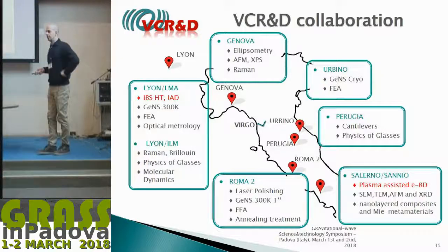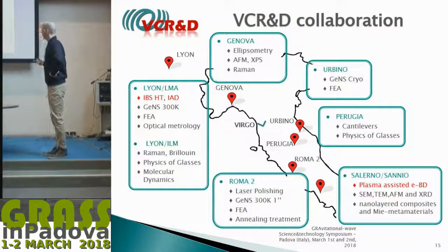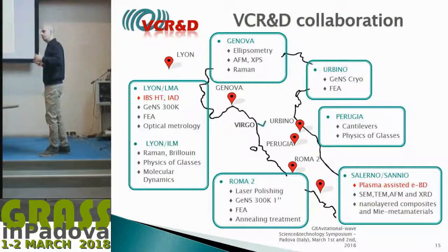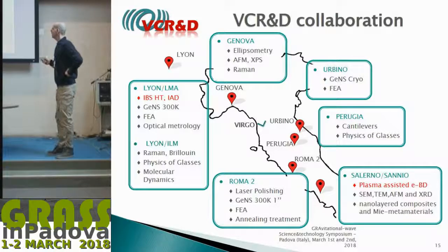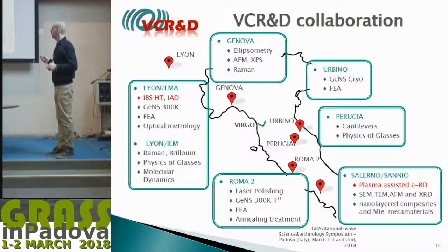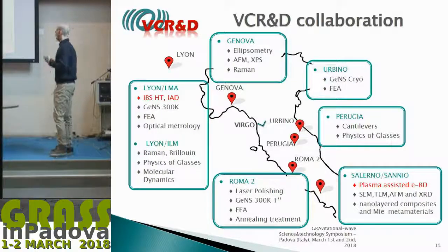The Virgo Coating R&D collaboration includes several laboratories from Italy—Genova, Urbino, Perugia, Roma 2—and Lyon in France, along with Salerno-Fisciano. The University of Salerno-Fisciano has the capability to produce coatings, and characterization is spread across the collaboration, including GENSO, nodal suspensions in Roma, and soon also in Urbino and Perugia, plus optical characterization in Genova.